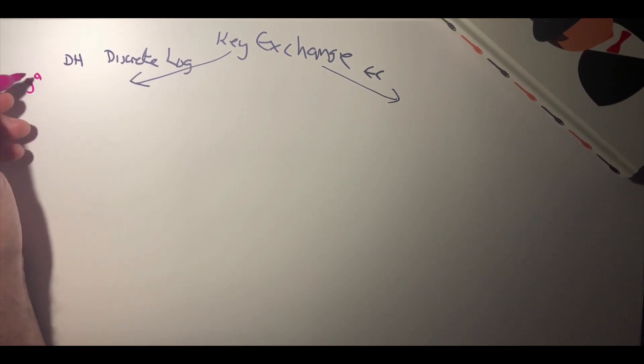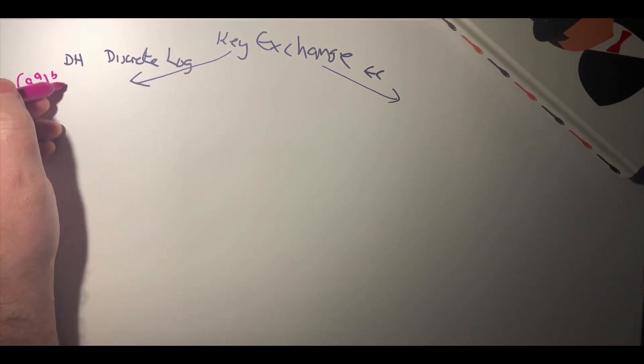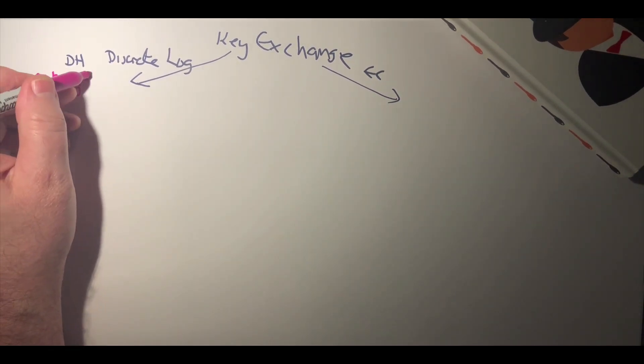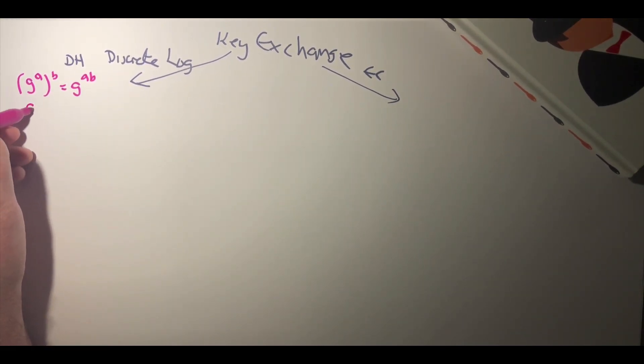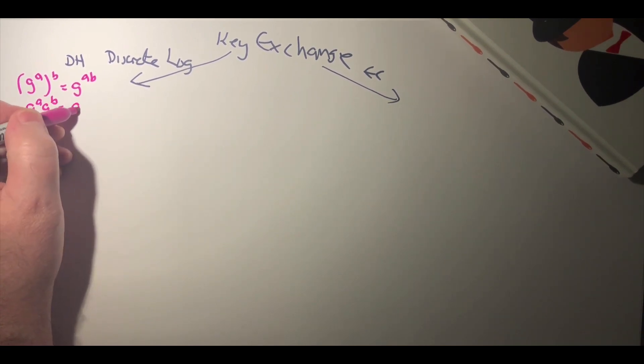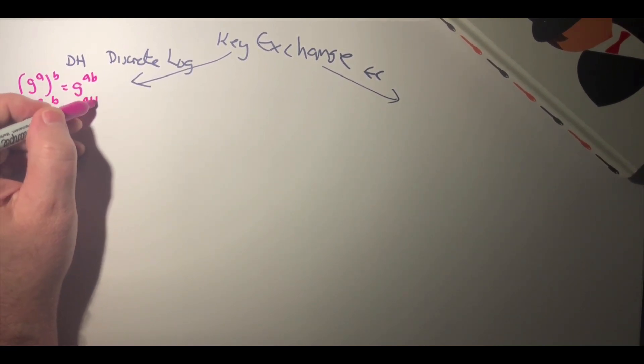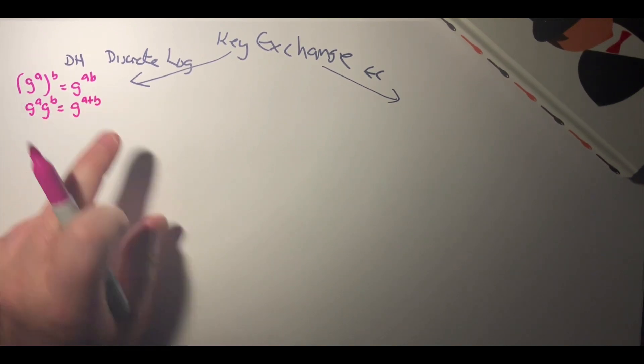If we have g to the power of a to the power of b, that's equal to g to the power of ab. If we have g to the power of a times g to the power of b, that equals g to the power of a plus b.